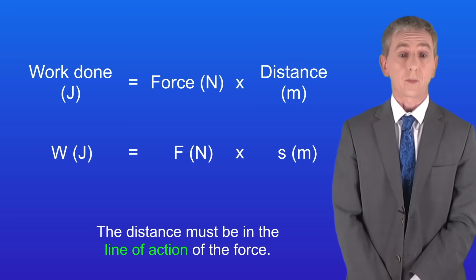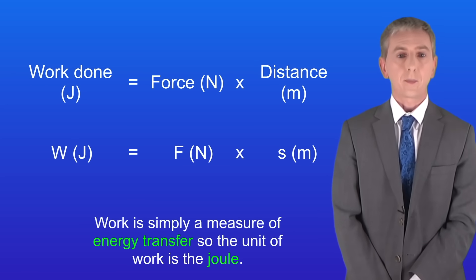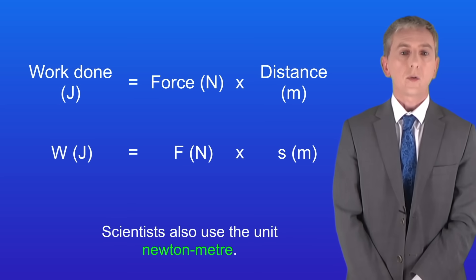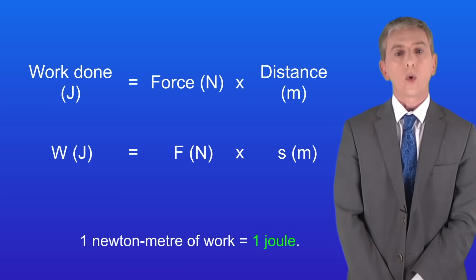Now you're not given this equation in the exam so you do need to learn it. Remember that work is simply a measure of energy transfer. So the unit of work is the joule. When a force of one newton moves an object by one meter then one joule of work is done. Now scientists also use the unit newton meter and remember that one newton meter of work equals one joule.